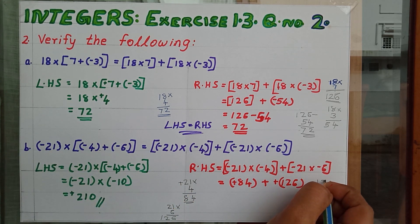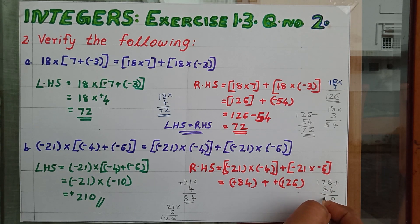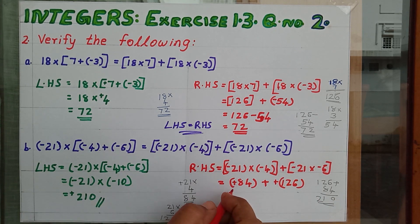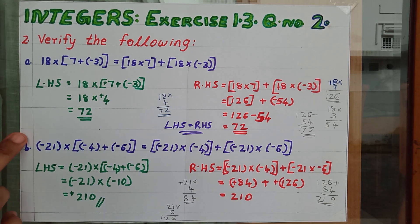Here both the numbers are positive and we have to add these two numbers. 84 plus 126. So answer is 210. Here we got LHS equal to 210 and RHS equal to 210.